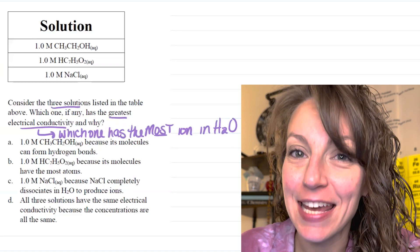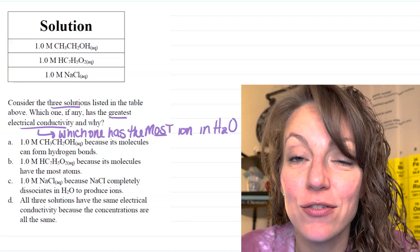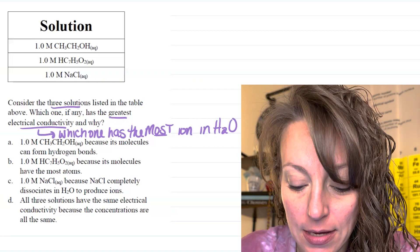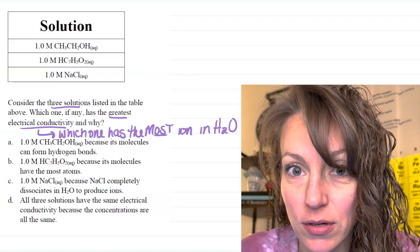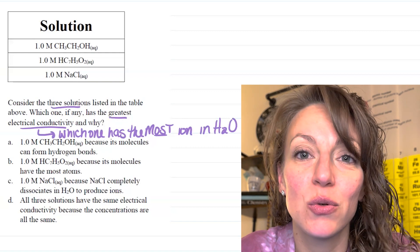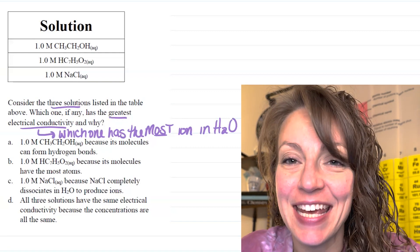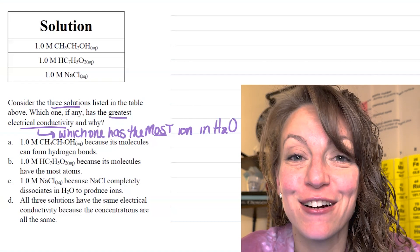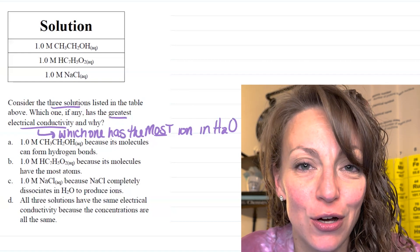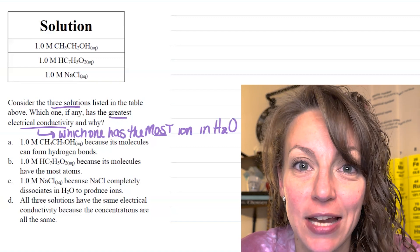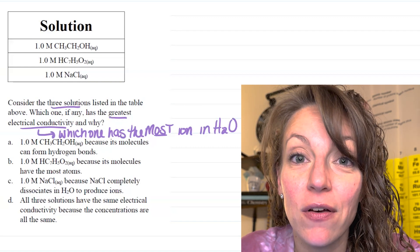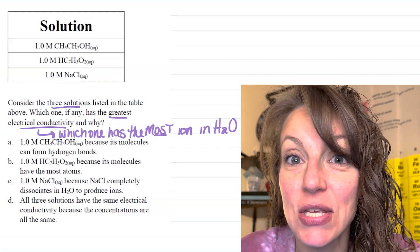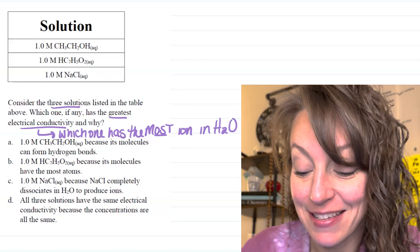So, let's analyze the table that they give us and consider each particular species that's in solution, starting with the first one. They give us 1.0 molar CH3CH2OH. Now, all of the atoms contained in that species are all non-metals. The carbon, the hydrogen, and the oxygen atoms. If a particular species consists of all non-metal atoms, then it is a covalent molecule.